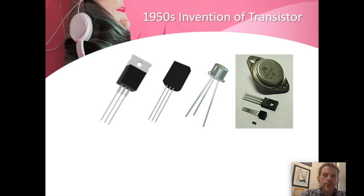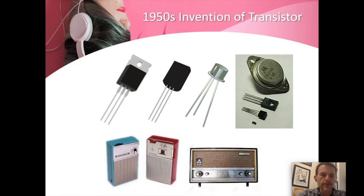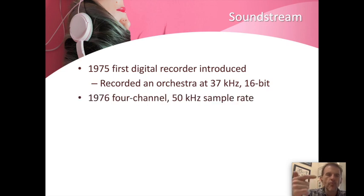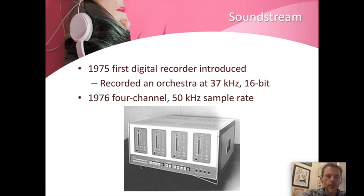Fast forward to the 1950s and the transistor is invented. The transistor replaces the vacuum tube and it does two things: it's either a switch or an amplifier. Because of the small size of the transistor, the equipment was now available to start putting this into practice. One thing you're familiar with is transistor radios — this was a huge improvement. Then we get into the seventies and the SoundStream is introduced in 1975, rapidly improved upon, eventually offering a four-channel, 50 kHz sample rate, recording an orchestra with four channels of digital audio.